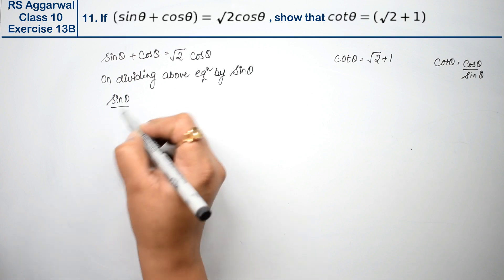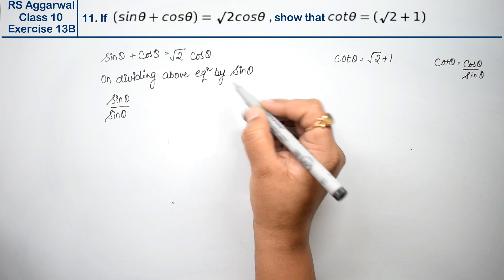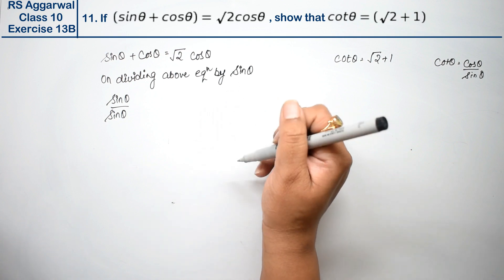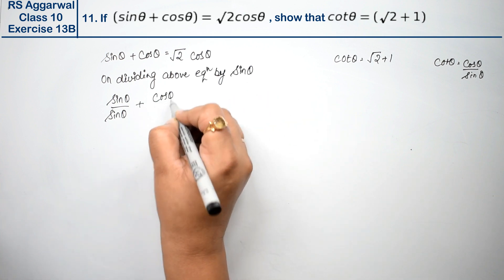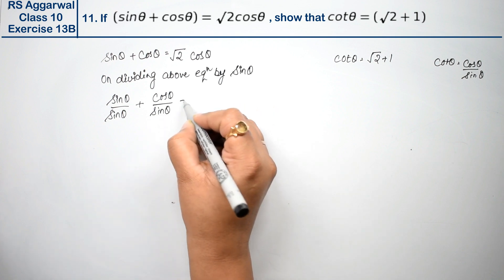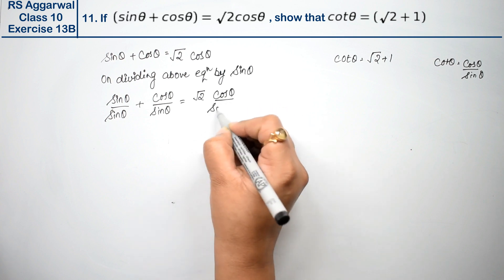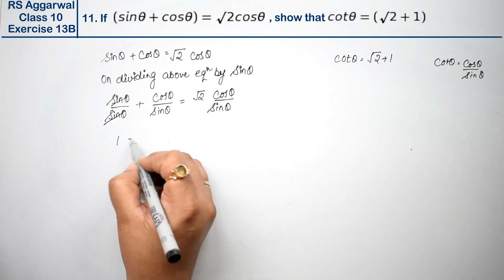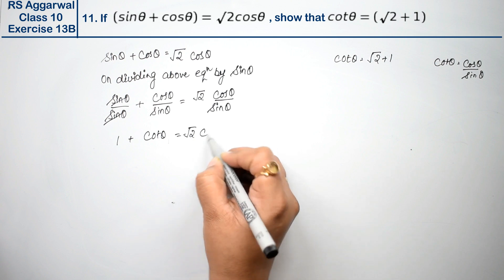Sin theta upon sin theta - if we divide the whole thing, left and right side by sin theta, equals root 2 cos theta upon sin theta. This cancels, so 1 plus cot theta equals root 2 cot theta.